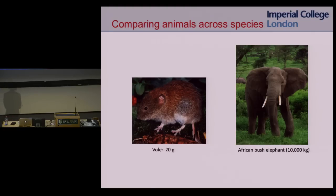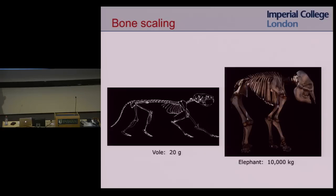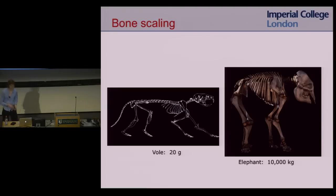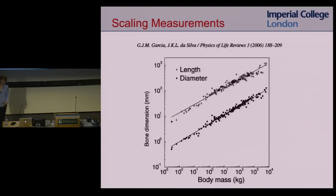If we look at the skeletons of these two animals — scaled to the same size — the elephant's bones are much thicker than those of the vole. As bones get bigger, they get relatively bigger diameter. That's called allometric growth — all the proportions aren't growing at the same rate. Allometric growth is measured in scaling studies by plotting a measure of bone dimensions versus body mass on a log-log plot, because then the scaling exponent becomes the slope of the line.